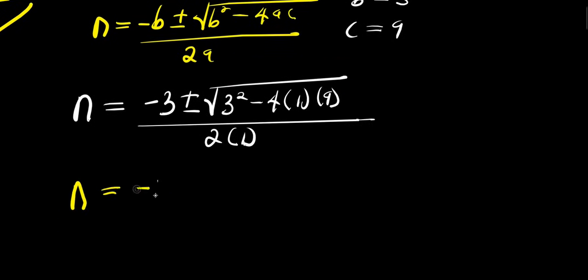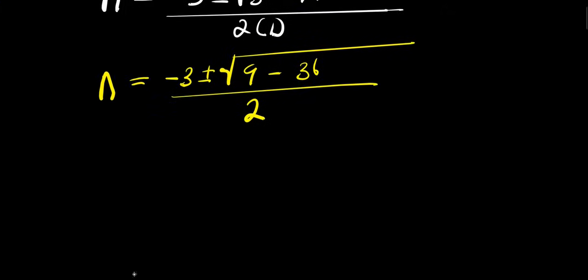n = (-3 ± √(-27))/2. From here, n = (-3 ± √(-27))/2.